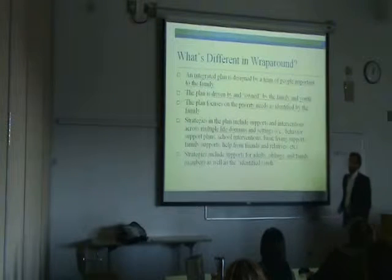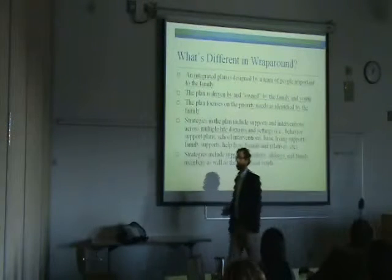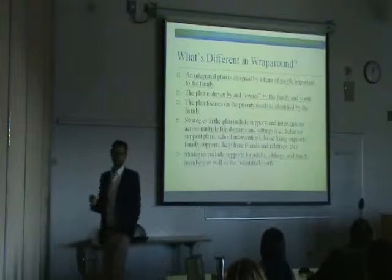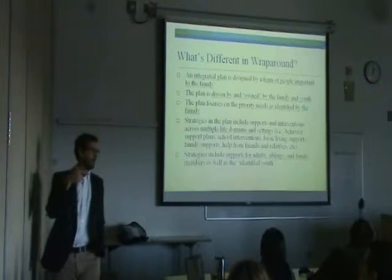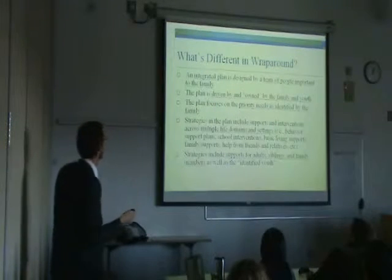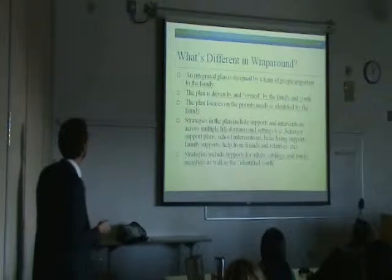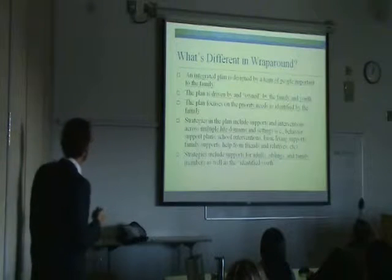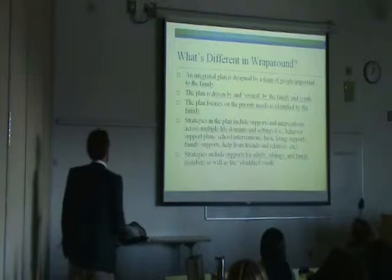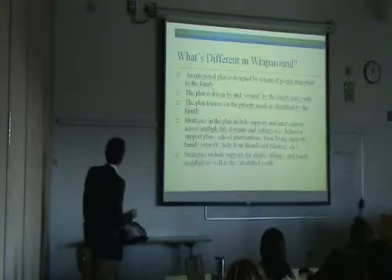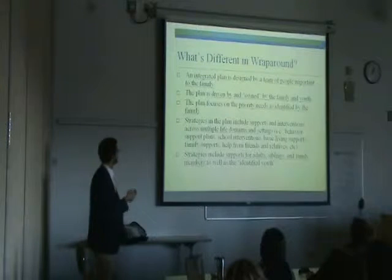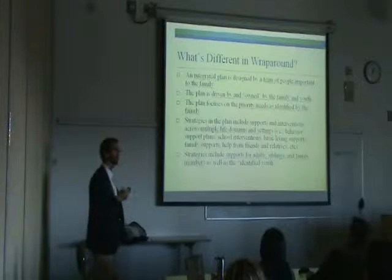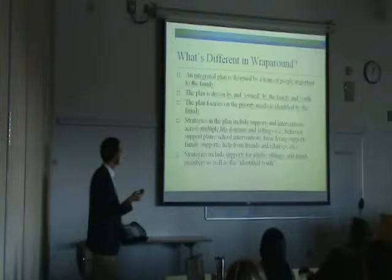So what is different in wraparound? We don't have a whole lot of time with the Evans family. We can describe some of the ways in which that family receives help through this process — just a thumbnail sketch. What's different in wraparound is you have an integrated plan designed by a team of people important to the family, and that plan is driven by and owned by the family and youth. The plan focuses on the priority needs as identified by the family and the team, who come together to help them prioritize across life domains.